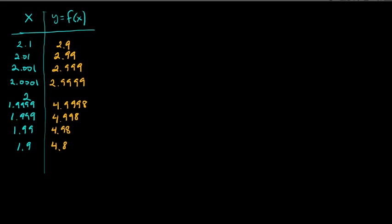So suppose we have a table, and we make a table with x-values on the left and the corresponding y-values on the right. The question is: what is the limit as x approaches 2 of this function? I didn't tell you what the function is, but in this case, it doesn't matter.